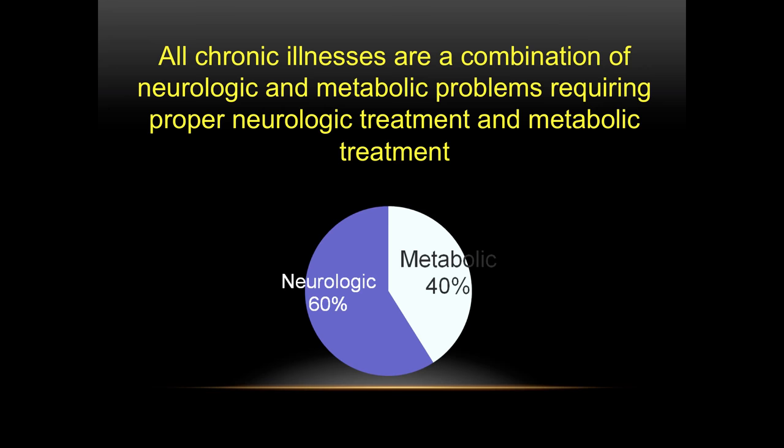In my office, it's a combination of issues — it could be 60% neurologic and 40% metabolic, or the next person could be 80% metabolic and 20% neurologic. It all depends on the testing and the type of neuropathy that actually presents.